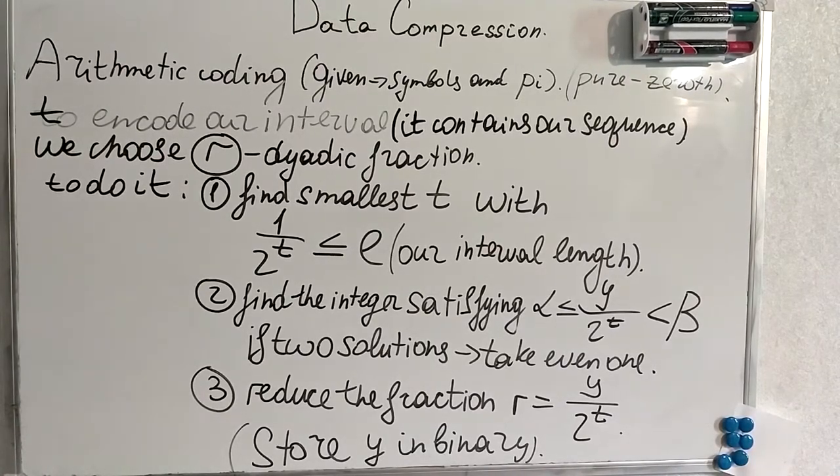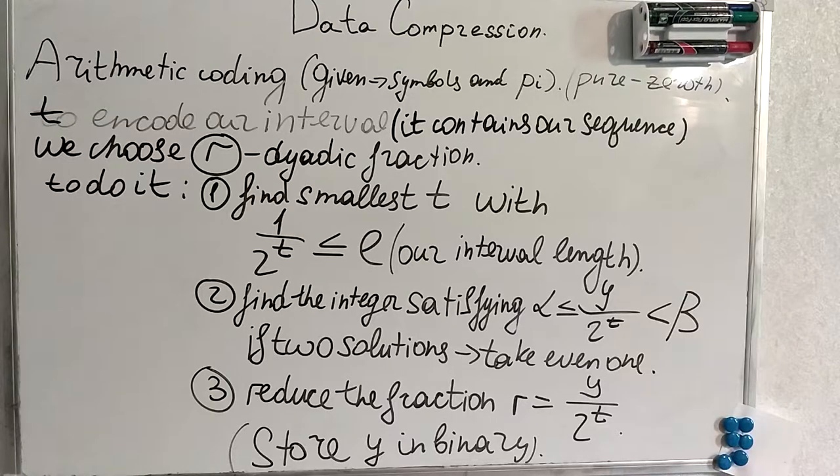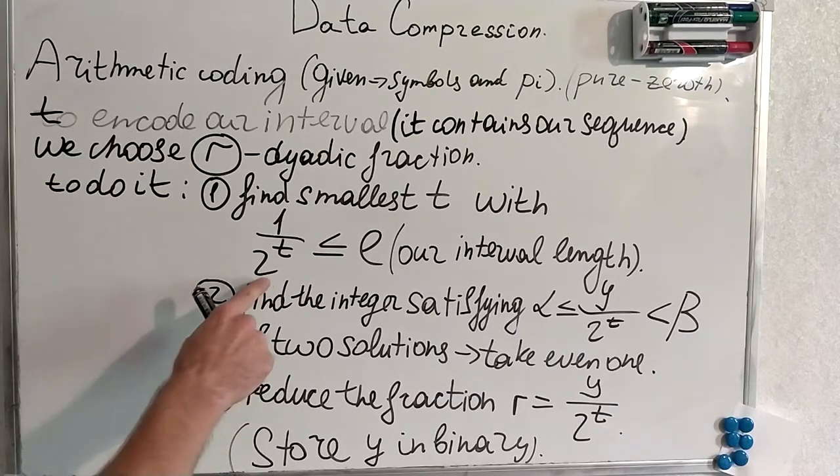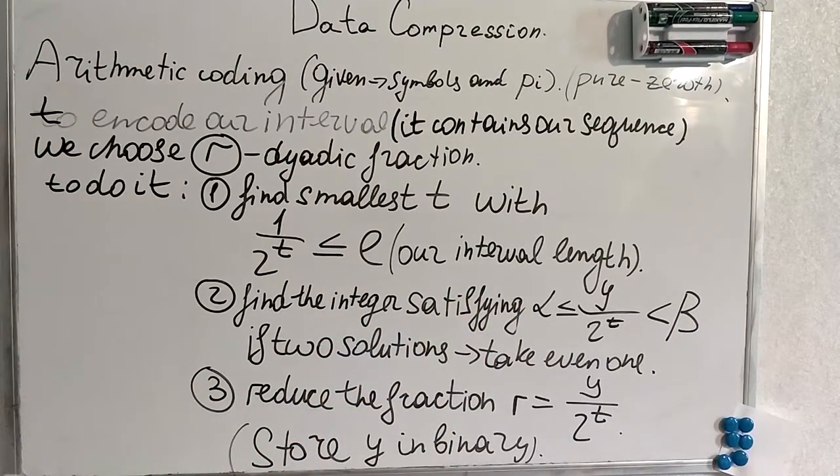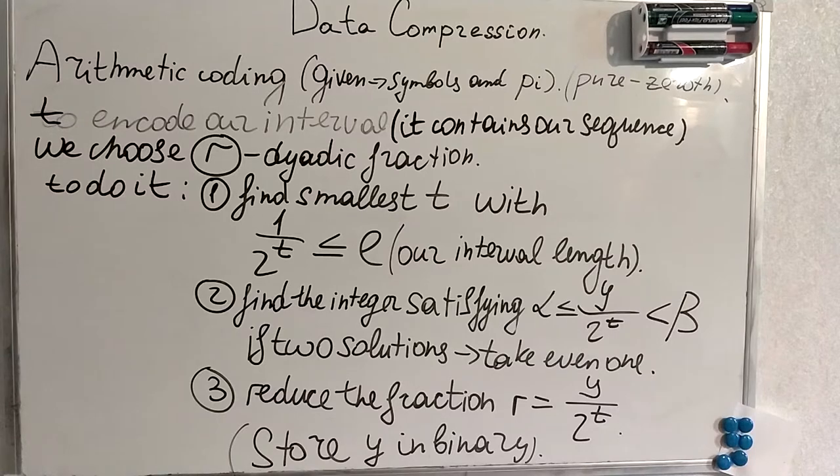This dyadic fraction guy deserves special explanation. At the end, as I said, we produce interval after the table step. Then in this interval, in this small number, we use dyadic fraction. To calculate the dyadic fraction we find the smallest t, this new variable we use. This inequality should hold. Our L here is our interval length. We have to find the integer satisfying also this inequality. If there are two solutions, we take the even one. Then we reduce the fraction. And then we store y in binary. The final answer is R.